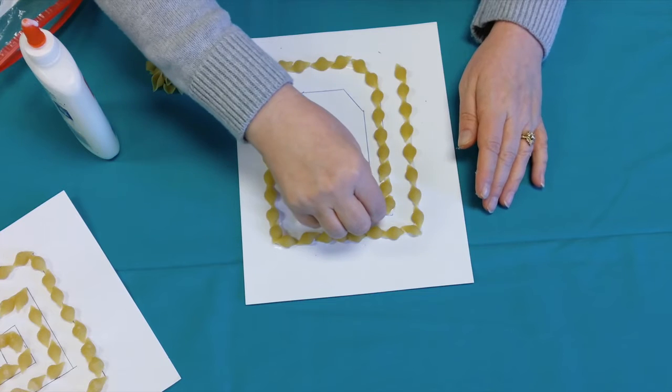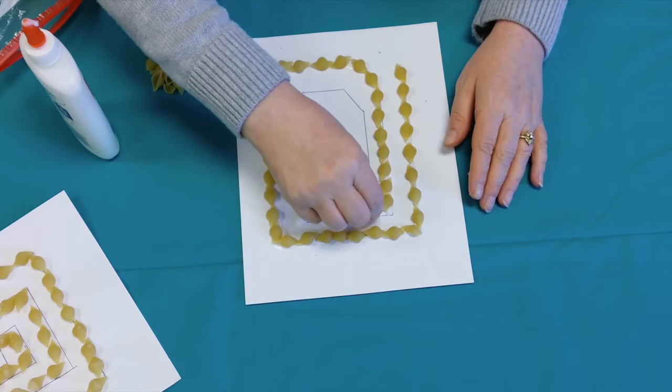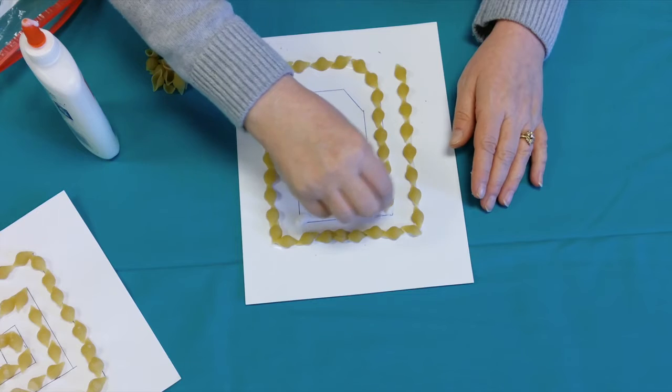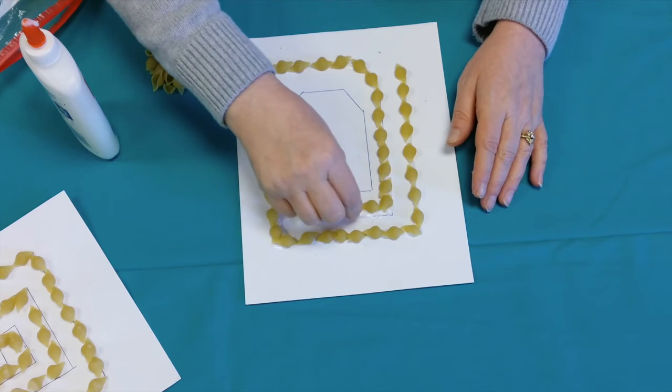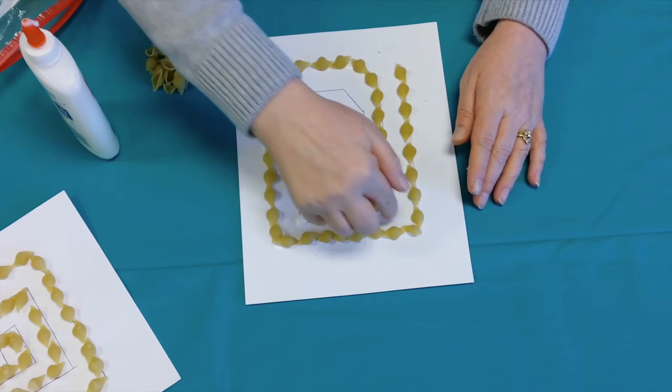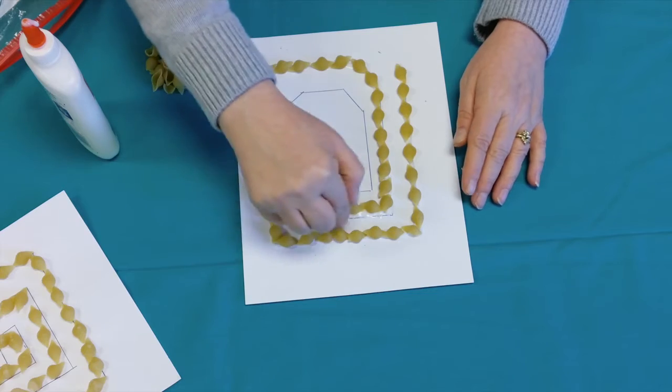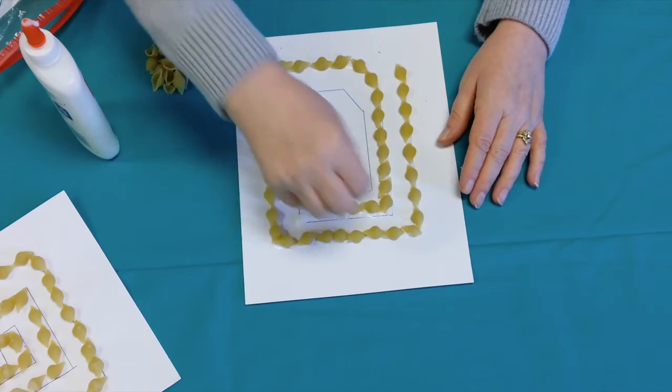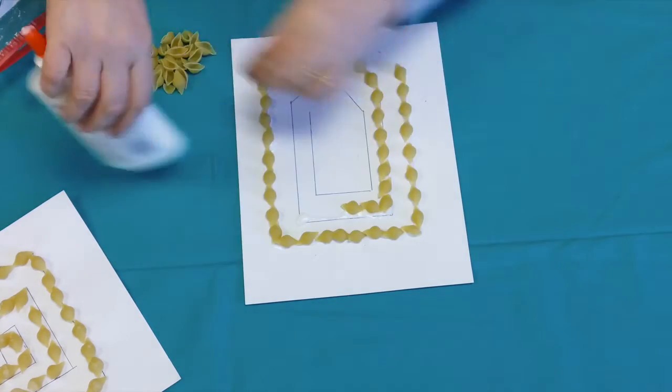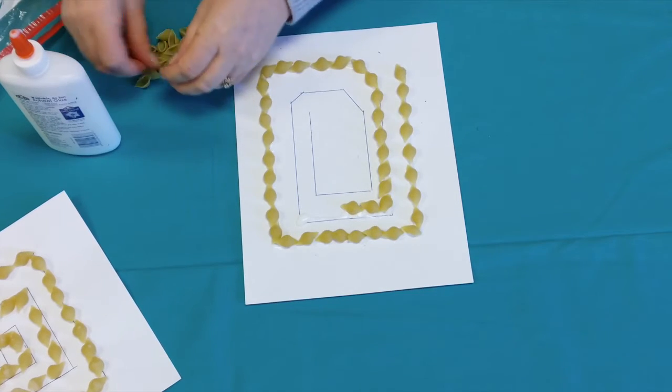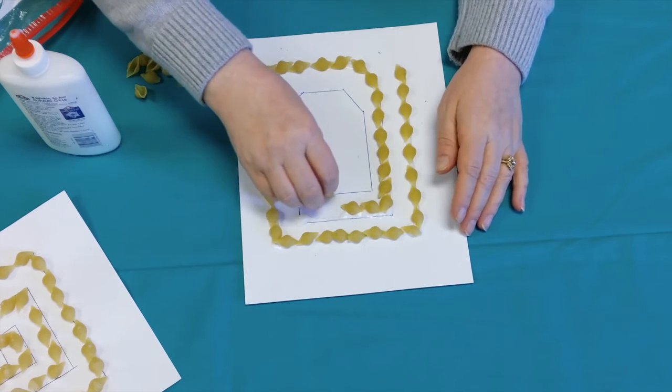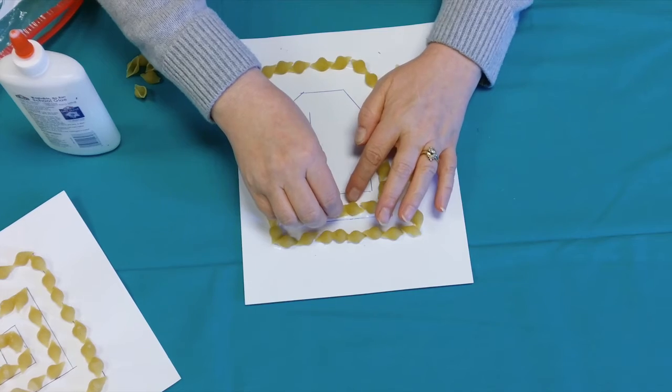So when you're doing this, if you notice that you're not going to have enough space you might want to bring your noodles in just a little bit because the stuff that's already there it'll dry but you want to make sure that your finger can go in between it because that's kind of the point of it, to have a little trail for your finger to go in.